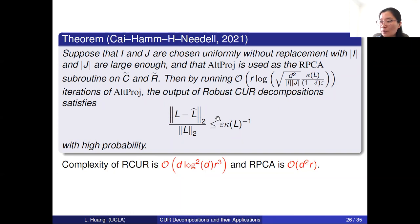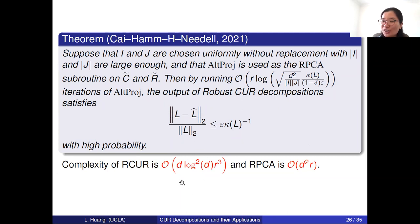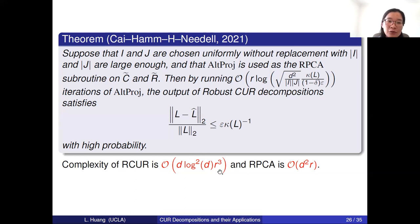Let's compare the complexity for our robust CUR decomposition. Since we only apply the robust PCA algorithm on two small matrices C-hat and R-hat, with uniform column and row index selection giving index size of order R log d, the complexity of the robust CUR algorithm is on the order of d times (log d)^2 times R-cubed. However, if we apply the robust PCA algorithm directly on the original noisy data D, the complexity is d-squared times R. If d is very large, reducing d-squared to d times (log d)^2 is a huge improvement.